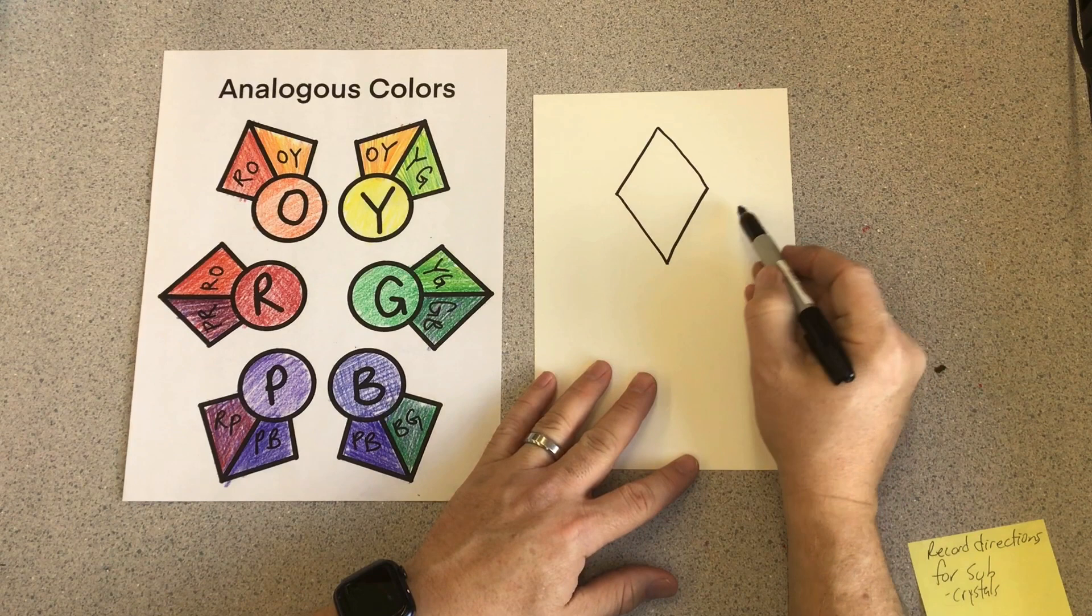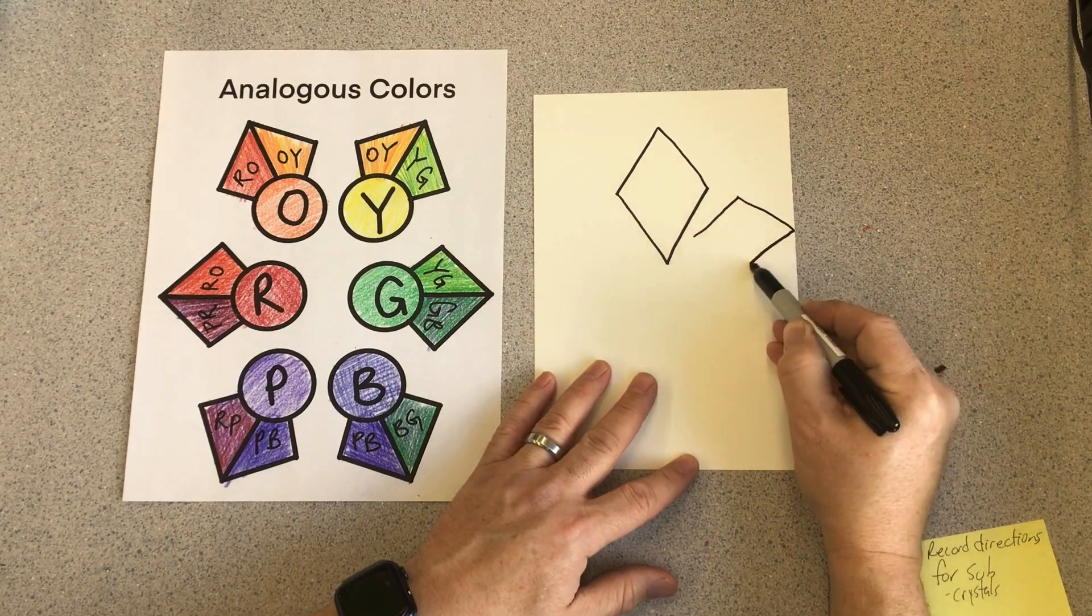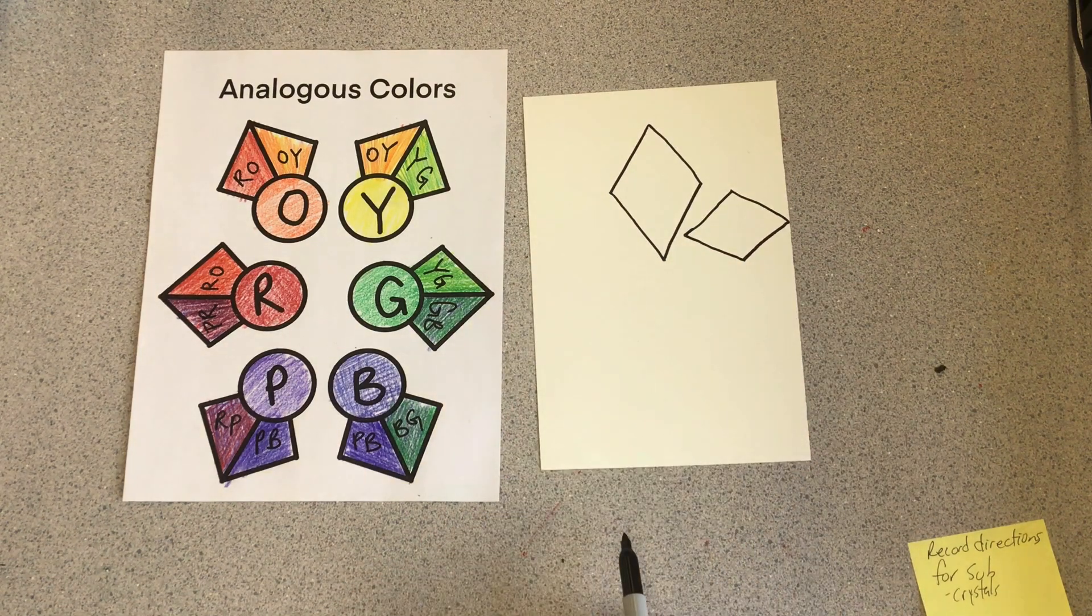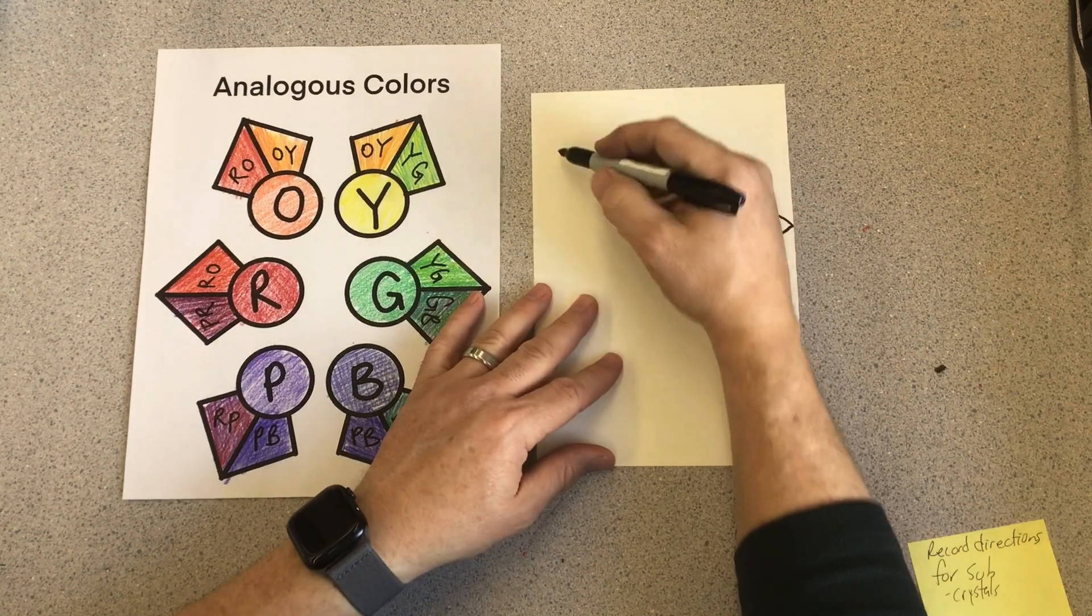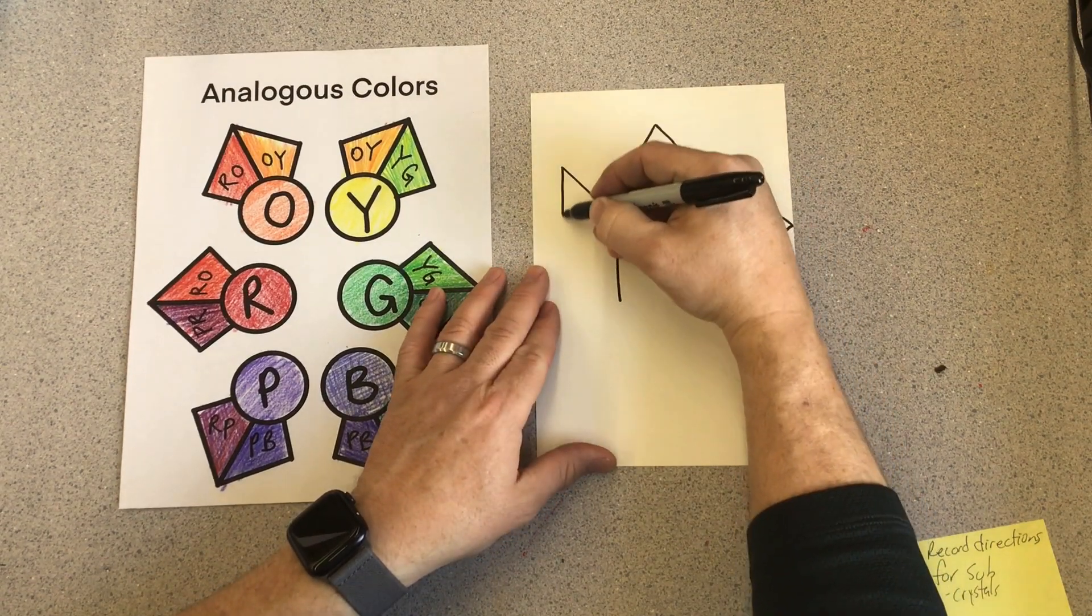And then next to it, I'm going to draw another diamond, but this diamond might be just a little bit wider. So it's still a diamond, it's just a different shape. And then last on this other side, I'm going to draw another diamond. Maybe this one is just a little bit longer and a little bit thinner.